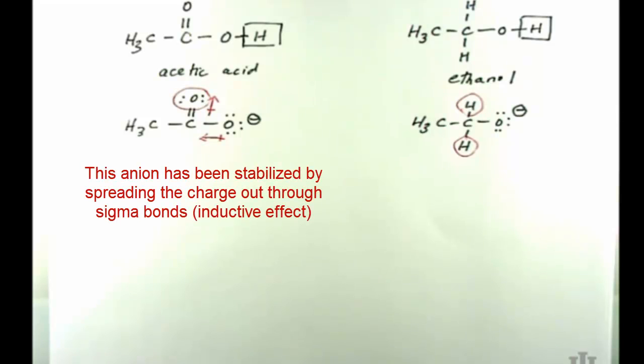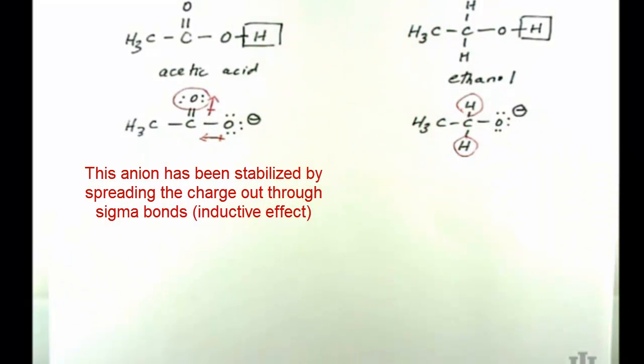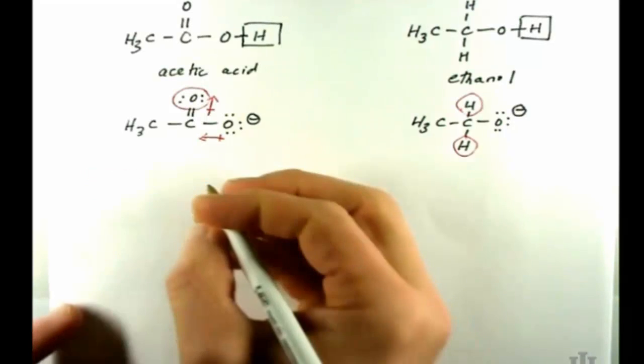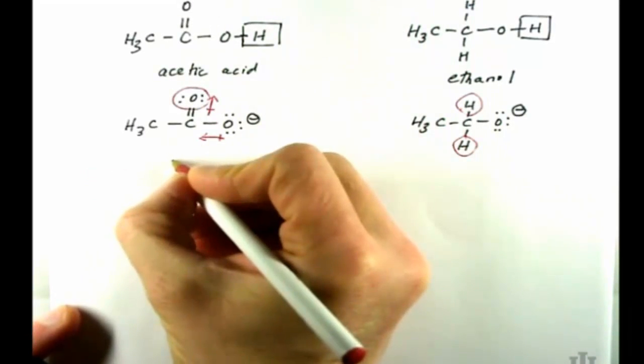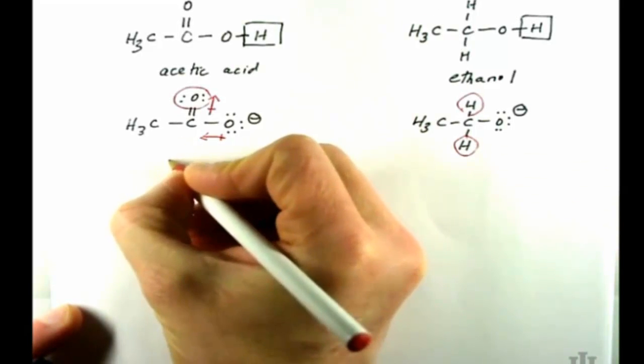And ultimately the effect here is that this negatively charged oxygen in the conjugate base of acetic acid has some of its electron density pulled towards the neutral oxygen. Okay, that effect is in comparison to the case where we have hydrogens in ethanol.